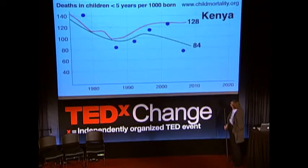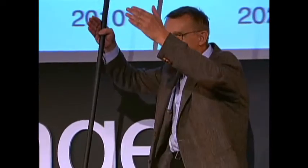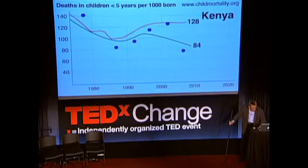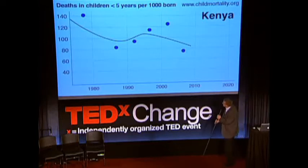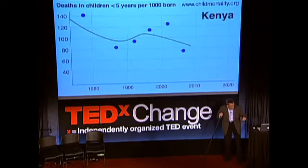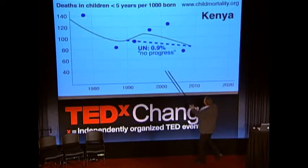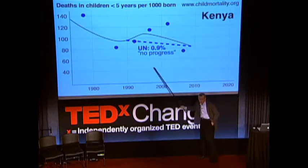I was actually on Friday sitting in front of my computer and I saw the death rate fall from 128 to 84 just that morning — so we celebrated. But now, when you have this trend line, how do we measure progress? The UN starts from 1990, measures to 2009, and says 0.9% — no progress. That's unfair.